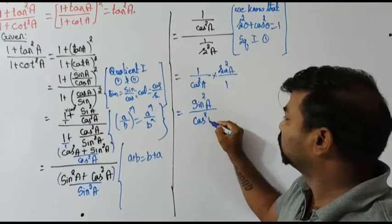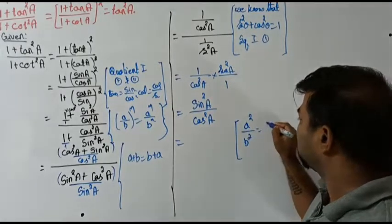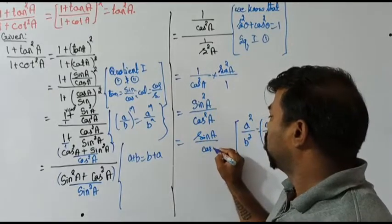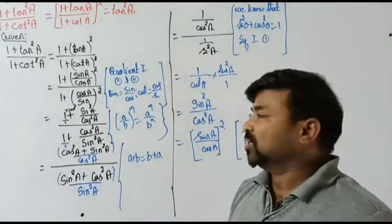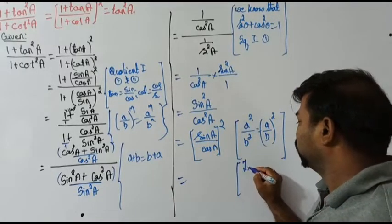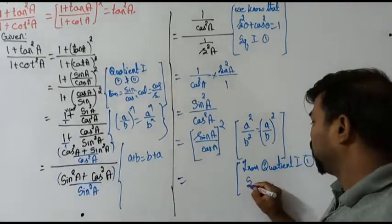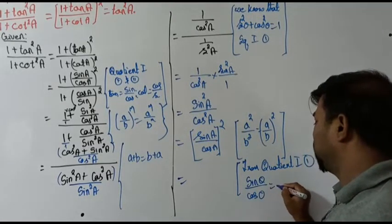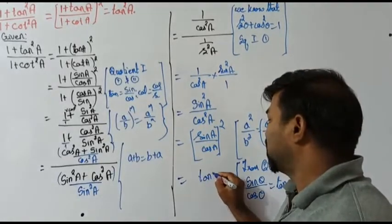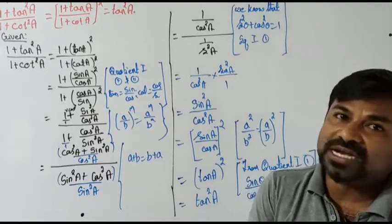Using the formula a square over b square equals (a/b) whole square, I write this as (sine a over cos a) whole square. From quotient identity one, sine theta by cos theta equals tan theta, so this becomes tan a whole square, which is tan square a.